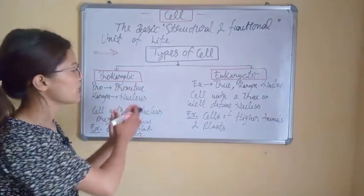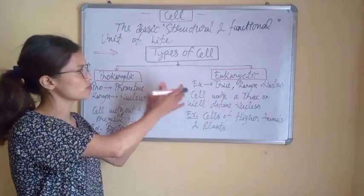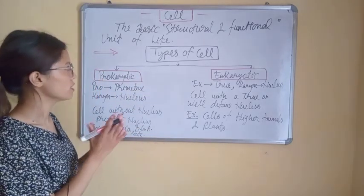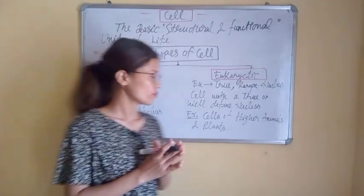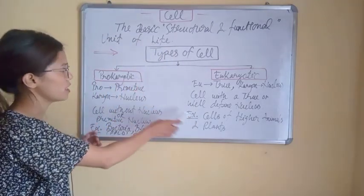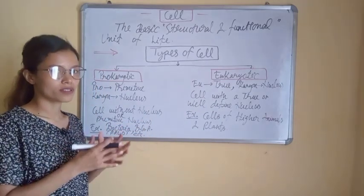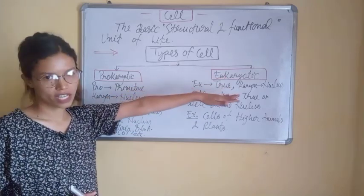One is prokaryotic and the other is eukaryotic. So this classification of cells is on the basis of the nucleus. On the basis of nucleus, there are two types of cells: one is prokaryotic and another one is eukaryotic. So let us understand prokaryotic and eukaryotic cells.